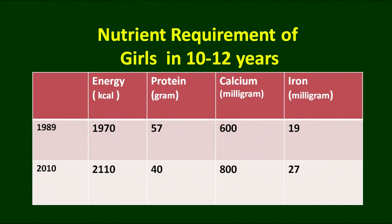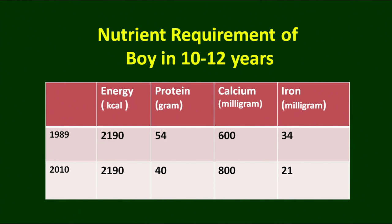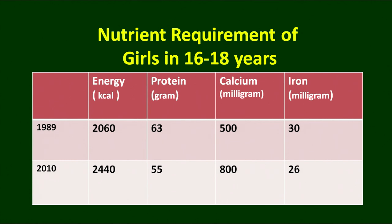We must not underestimate this age group — the nutritional requirements are very high. For boys of the same age group, 10 to 12 years, the energy requirement is similar, protein requirements are 40 grams, calcium requirements are 800 milligrams, and iron is 21 milligrams. For adolescent girls, 2440 calories are required, which is much higher than for adults. Protein requirements are 55 grams, calcium is similar to adults, but iron requirement is still high at 26 milligrams per day.